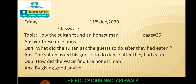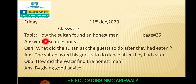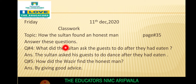Class work لکھیں۔ آج day Friday ہے، date 11th December 2020 ہے۔ Topic: How the Sultan Found an Honest Man، page number 35۔ Answer these questions - question number one, two and three ہم نے پہلے کر لیا تھا۔ آج ہم question number four اور five کریں گے۔